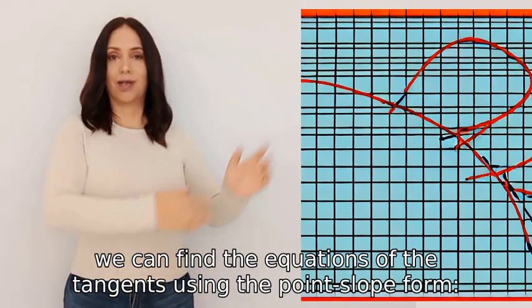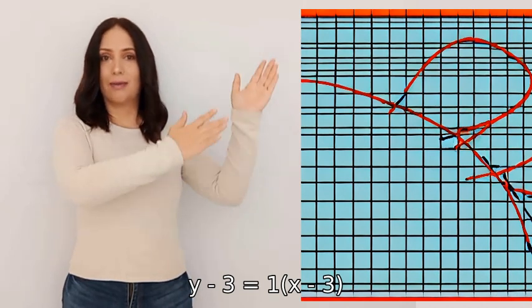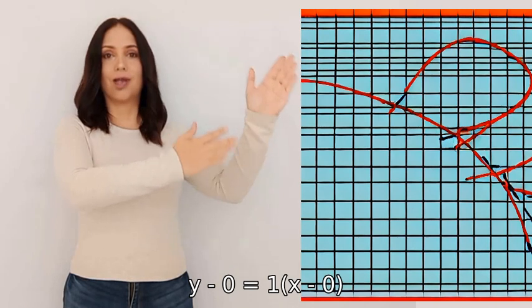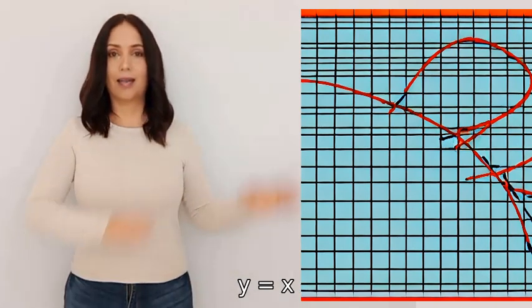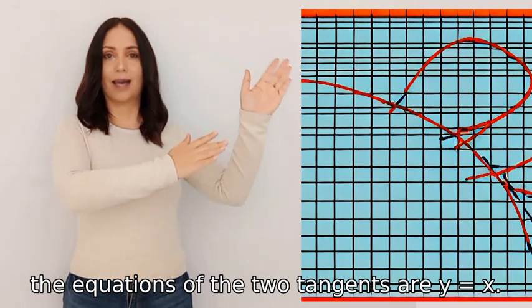For point (3,3): y - 3 = 1(x - 3), which gives y = x. For point (0,0): y - 0 = 1(x - 0), which gives y = x. Therefore, the equations of the two tangents are y = x.